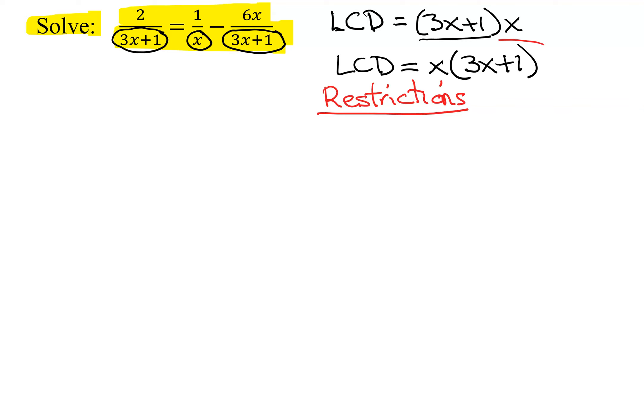To do that, we set the LCD equal to 0. So I'm going to have x equals 0, and 3x plus 1 equals 0. And so I know I can't have 0 in the denominator.